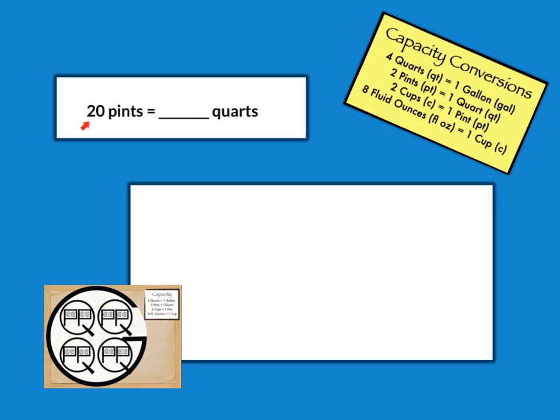For my next problem, I'm going from twenty pints to quarts. Now pints is the smaller unit and quarts is the larger unit, which means I would need fewer quarts than pints. So I'm going to be going in the opposite direction. I'm going to be dividing. So if I see up here that I have two pints in every quart, if I take my twenty pints and I divide it by two, I will find that I am going to get ten quarts out of twenty pints.